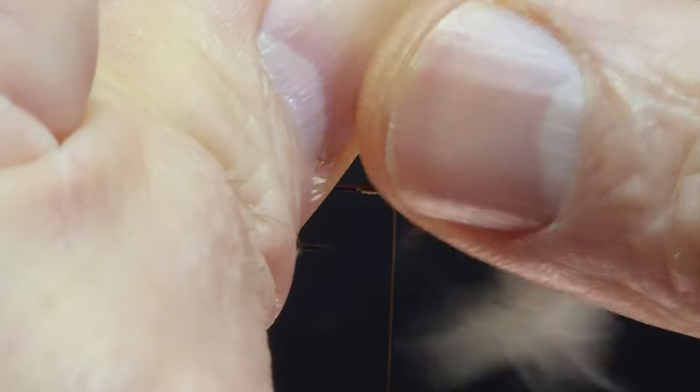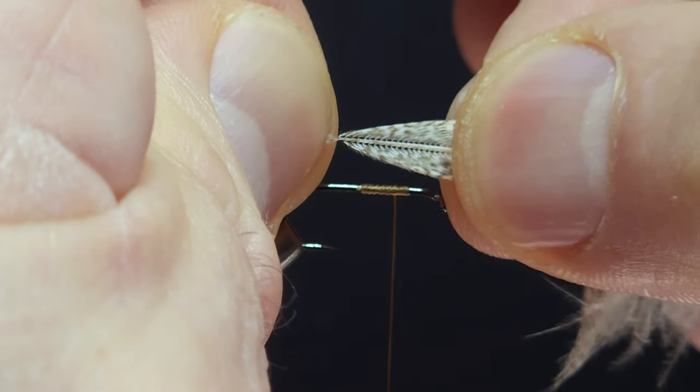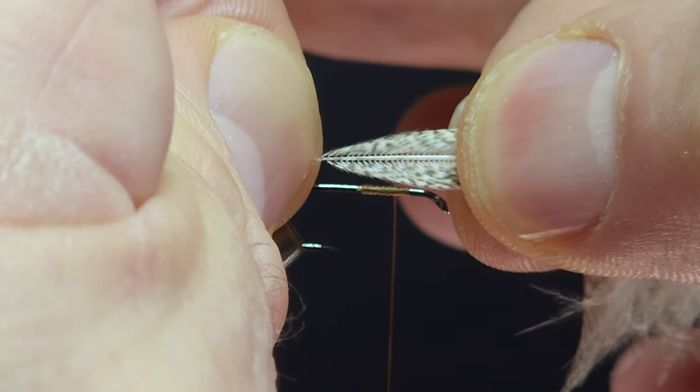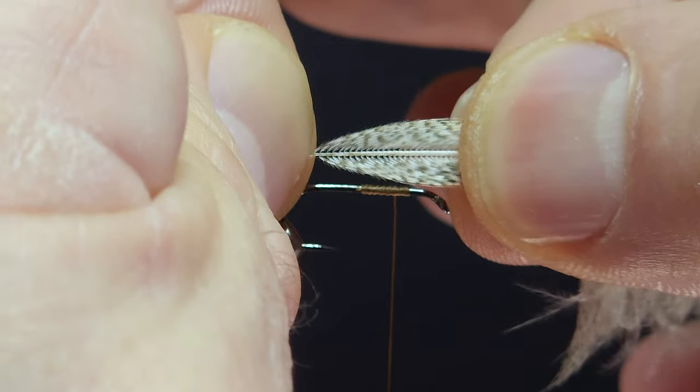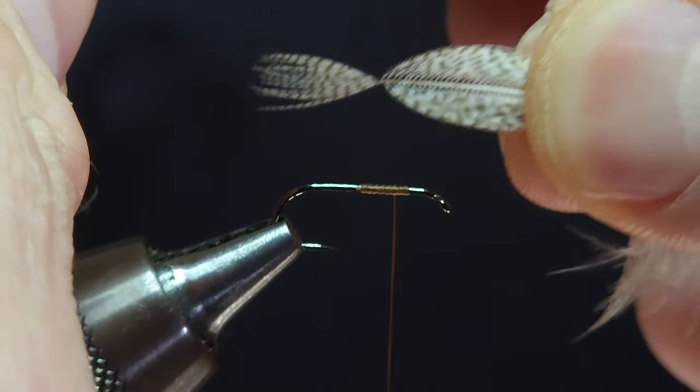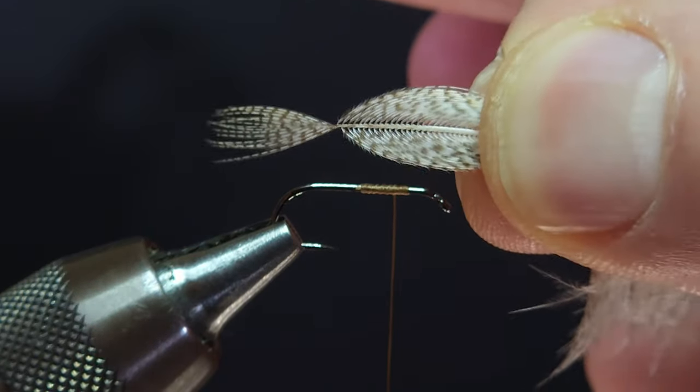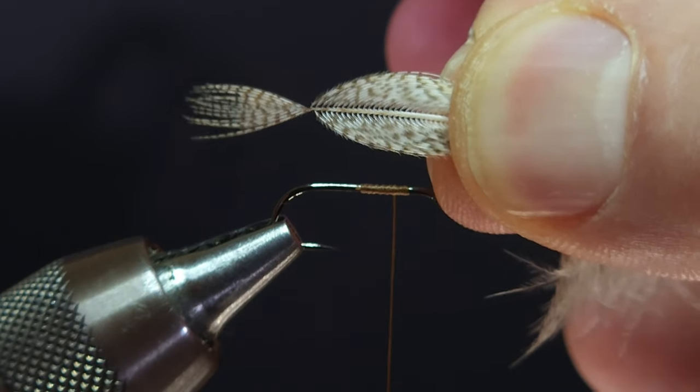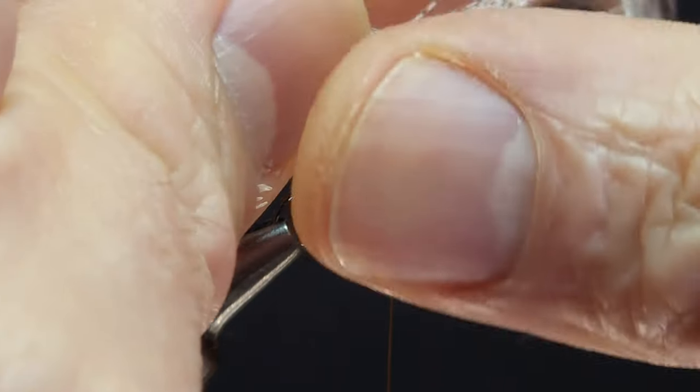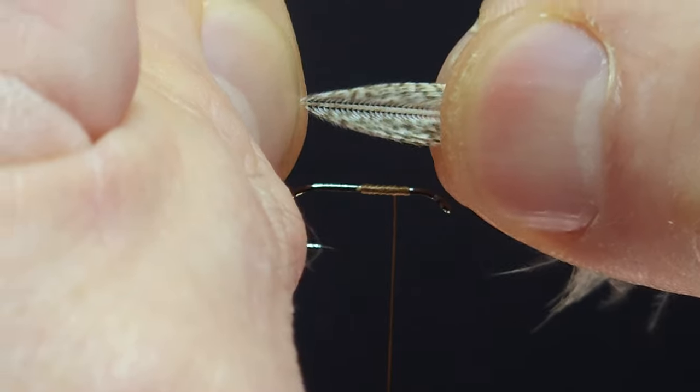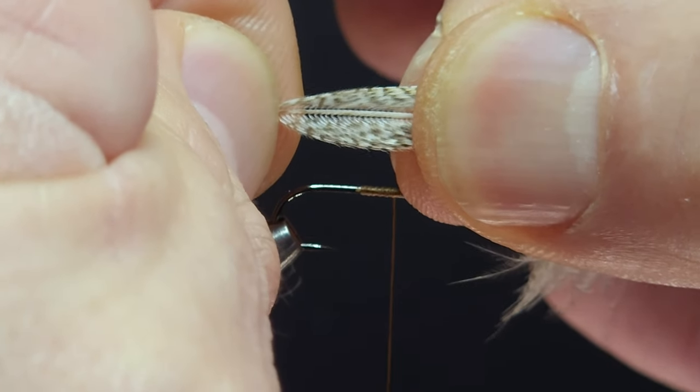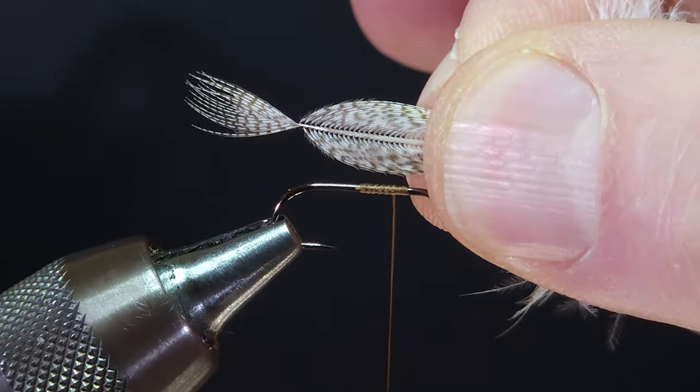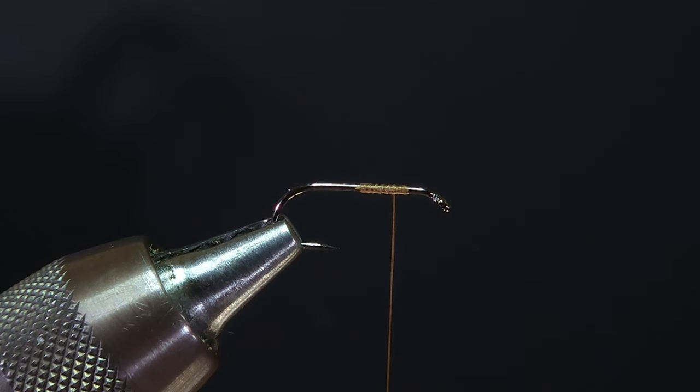You can see here as I preen these feather barbs towards the base and keep compression on them they form kind of an oval shape and that's what we're going for. I can either do this with just my fingers to hold that shape while I tie it into the hook, or I can use a tool to help out a little bit.